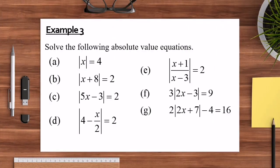Now we continue with Example 3: Solve the following Absolute Value Equations. Question A: |x| = 4. Question B: |x + 8| = 2. Question C: |5x − 3| = 2. Question D: |4 − x/2| = 2. Question F: |2x − 3| = 9. Question G: 2|2x + 7| − 4 = 16.